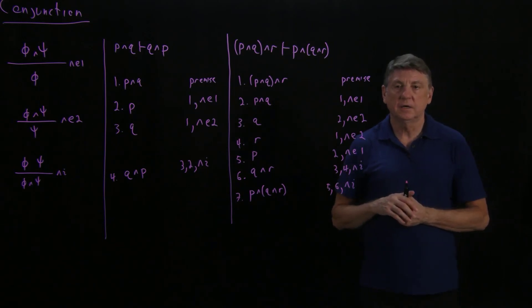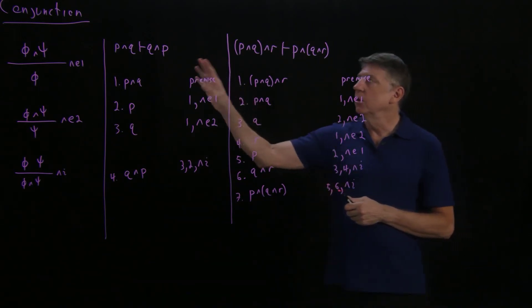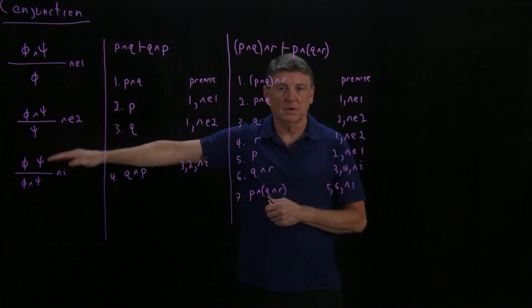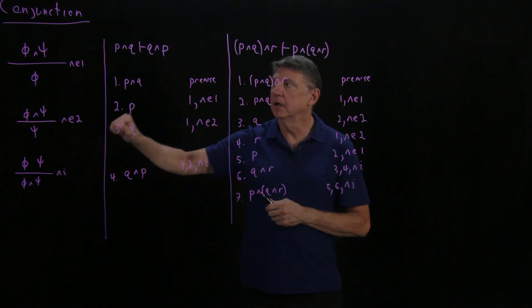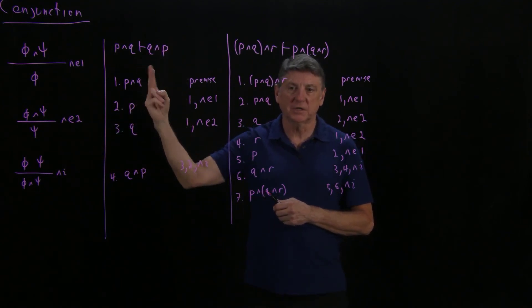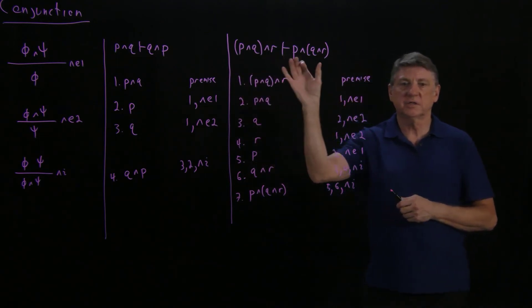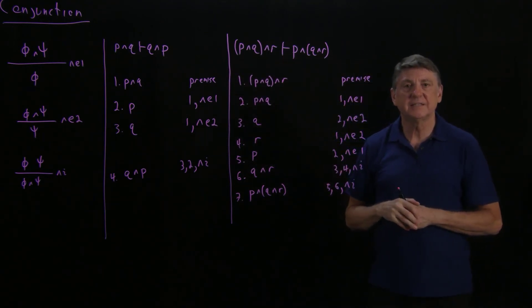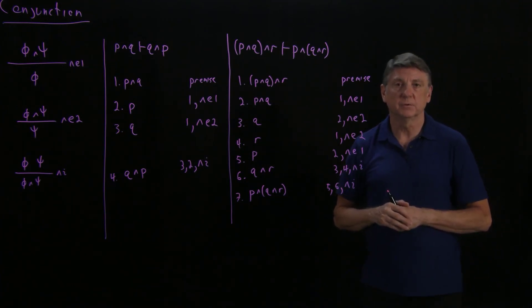So what we've done in this brief session is we've laid out three rules for conjunction in natural deduction. We've shown one example of how conjunction is commutative, and one example of how conjunction is associative. That ends this session, and in further sessions we'll explore some other rules.